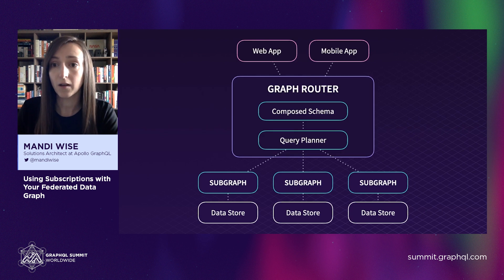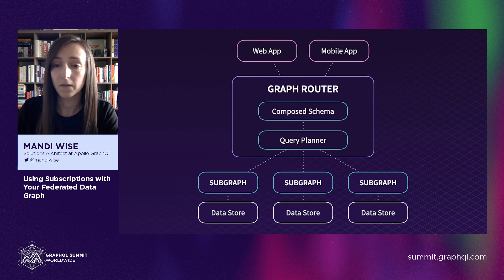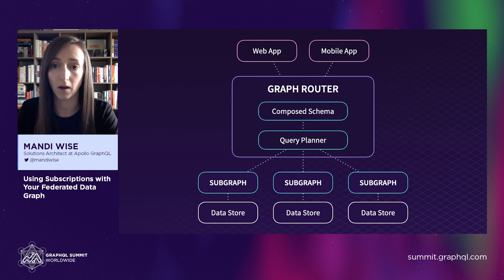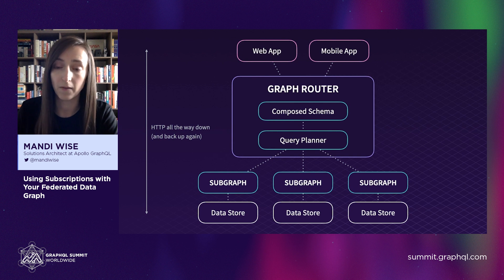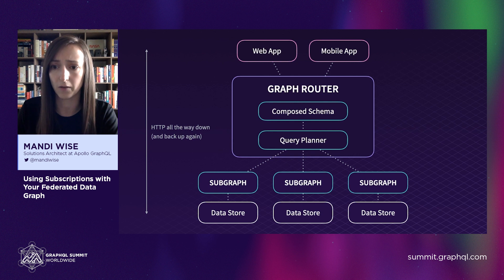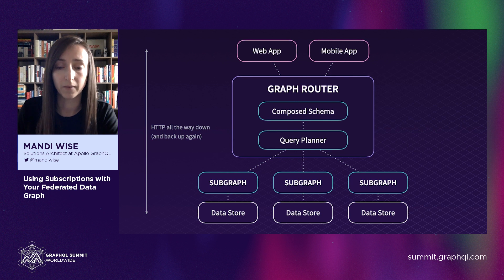Turning our attention back to our federated datagraph, a key feature of Apollo Federation is that it was designed to support decoupled and distributed GraphQL architectures. However, the stateless nature of the HTTP transport layer that usually supports query and mutation operations may not need to scale in the same way that stateful WebSocket connections need to. But in a standard approach to implementing subscriptions, we often end up coupling these two transport concerns together.